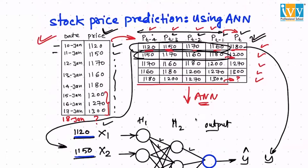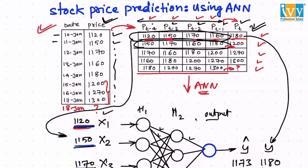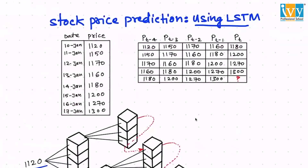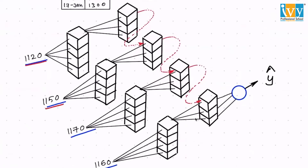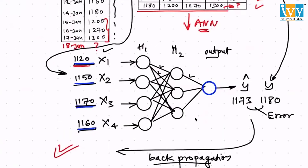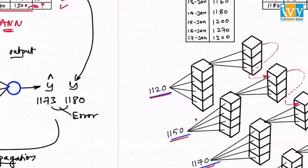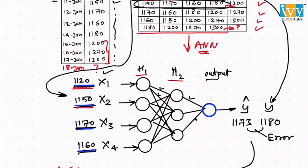Recurrent neural networks or LSTMs try to learn these interdependencies between the inputs — how 1120 is affecting 1150, affecting 1170, affecting 1160 and 1180. In LSTMs, instead of passing one single row of data to the whole network, I define the whole network but pass each input separately — one at a time. So 1120 will be passed to the whole network, and so on for each time step.